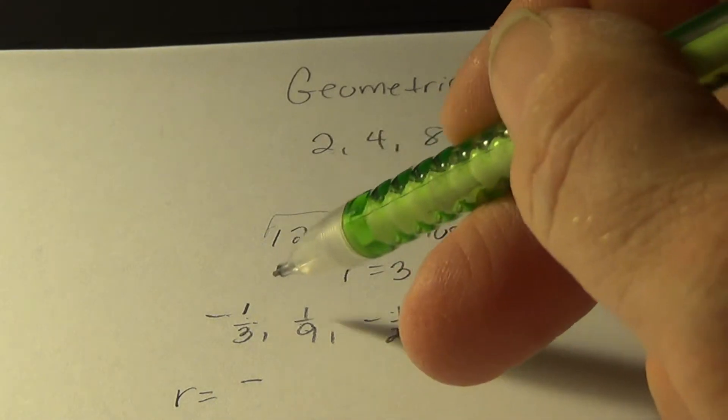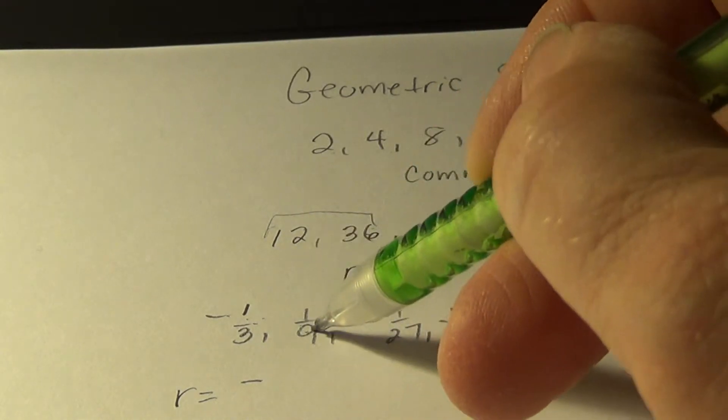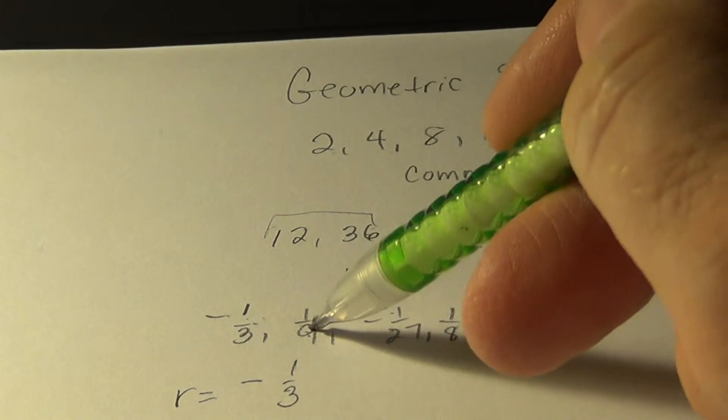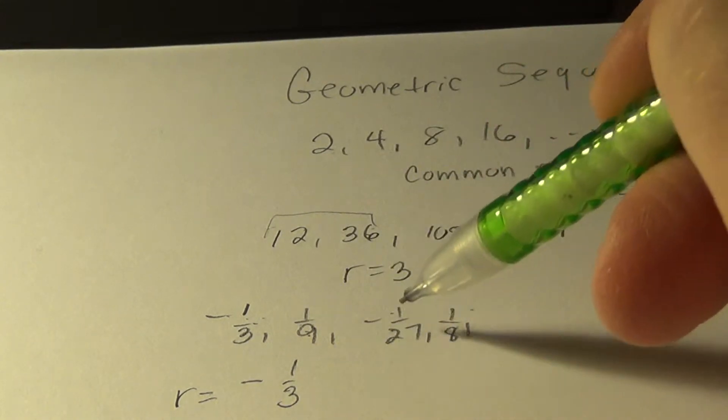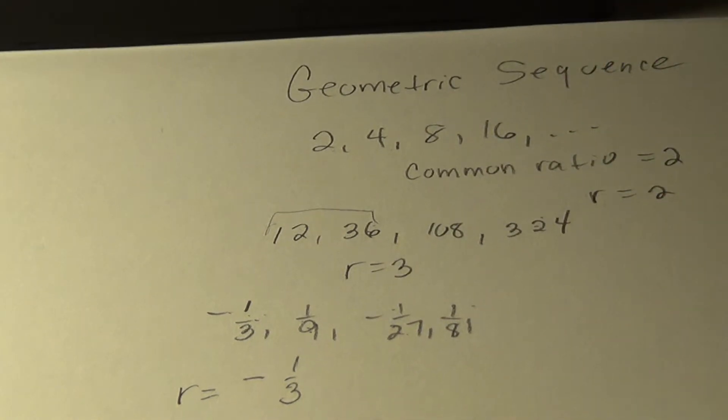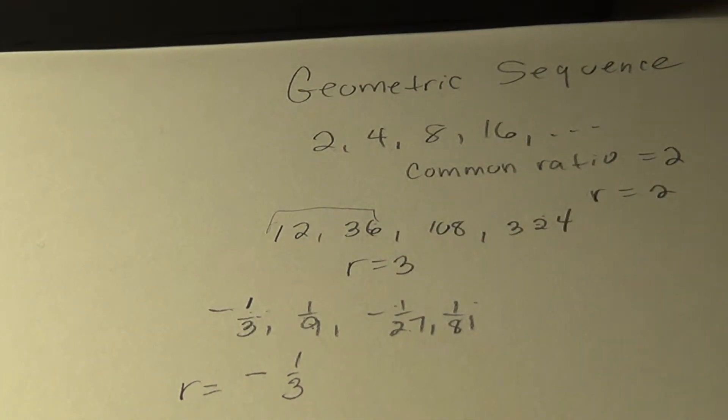And it looks like I multiplied this by 1 third to get that. And you'll see that this times 1 third is that. This times negative, I'm sorry, negative 1 third is that. So the common ratio can be fractional, it can be negative.